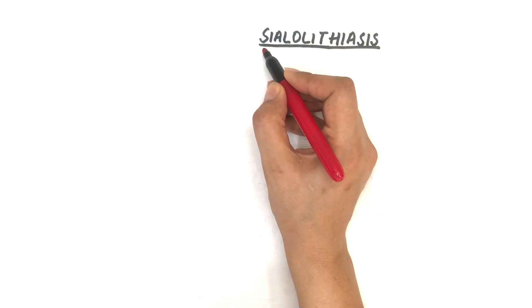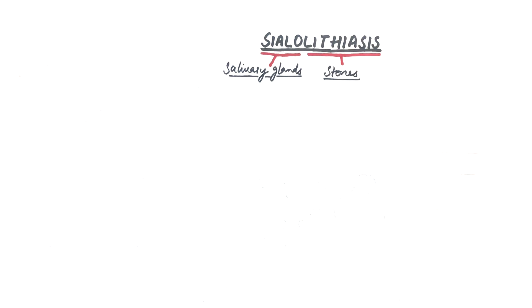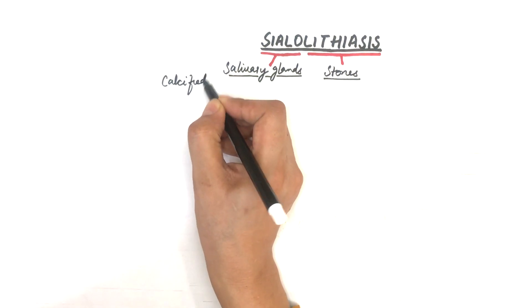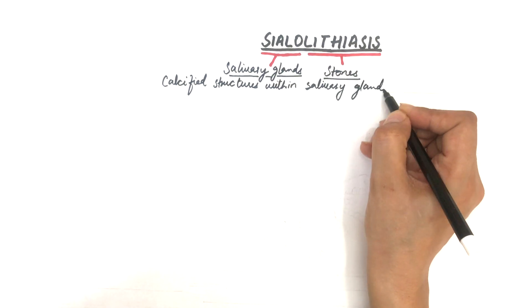Sial refers to salivary gland and lith refers to a stone. The suffix iasis means formation. So, in definition, sialolithiasis are calcified structures that form within the salivary gland or its ducts.